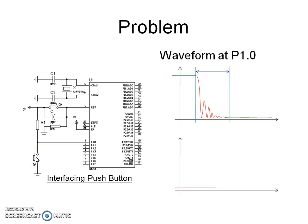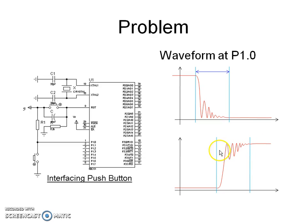With the push button pressed, the voltage at P1.0 pin is 0V. When the push button is released, the voltage at P1.0 rises from 0V to +5V. However, there are some damped oscillations before the voltage reaches the steady state value of 5V, lasting 20 to 100 milliseconds, which cause the program to detect multiple key releases. A software solution is to detect a low-to-high transition at P1.0, wait for 20 milliseconds, and then check whether P1.0 is at logic high level.